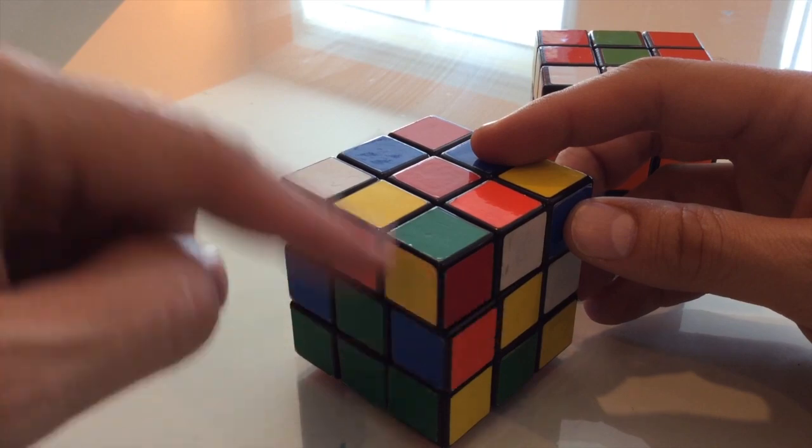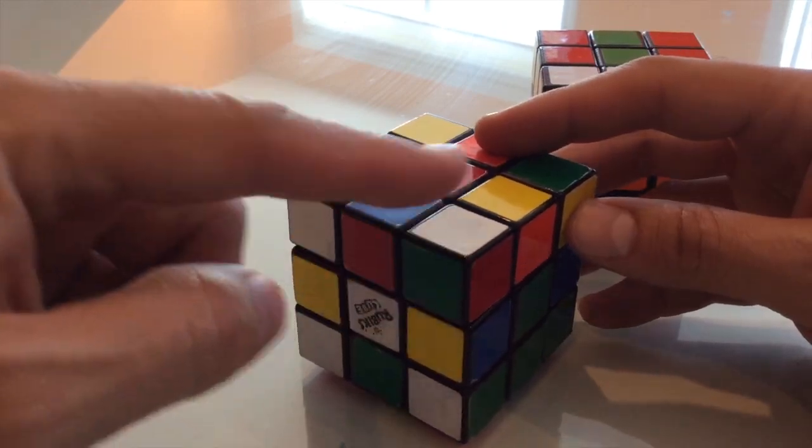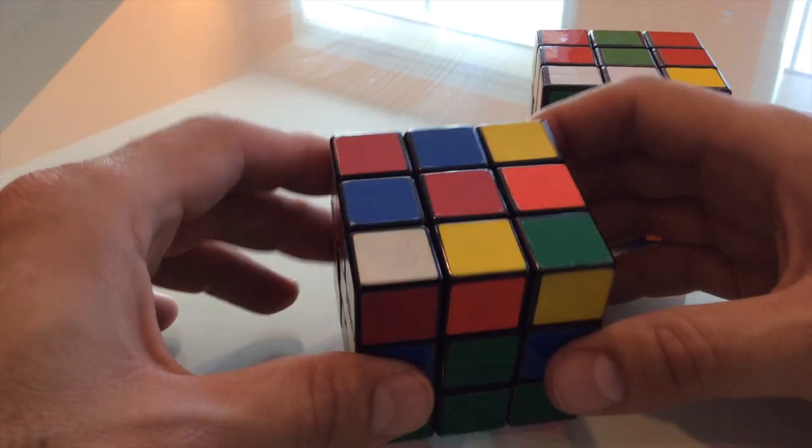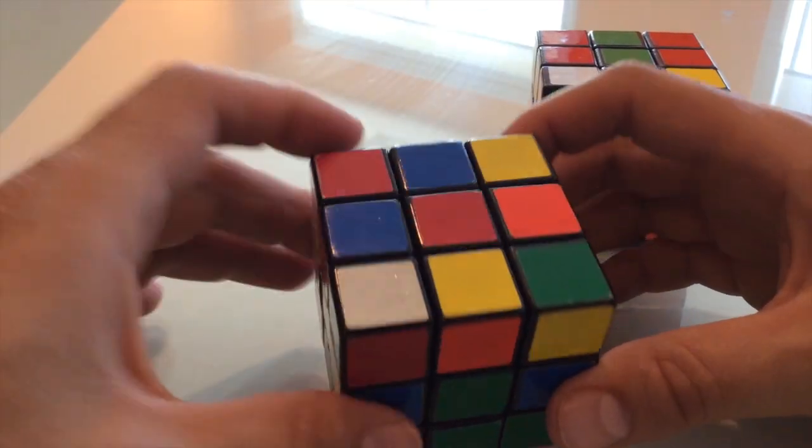This is a green, yellow, red. It belongs here. And the white, green, red, it belongs here. So that's what we taught you in part two is how to put the four corners in the right spot.